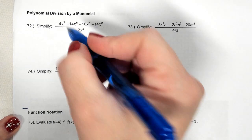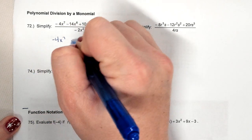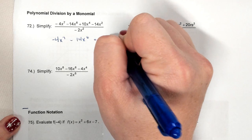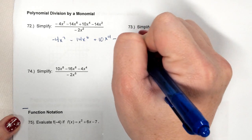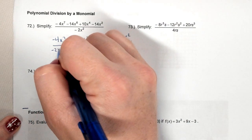What that means is I can just separate my denominator. I'm going to rewrite -4x⁷ - 14x⁶ + 10x⁴ - 14x² and rewrite them as all their own fraction with -2x² underneath.